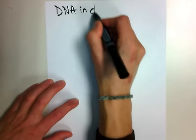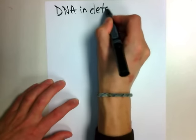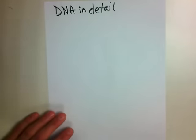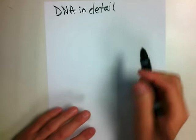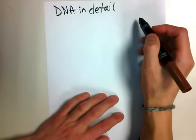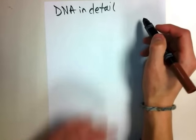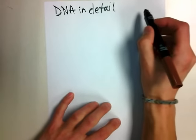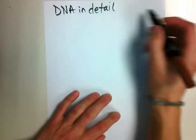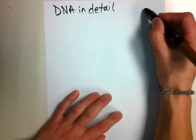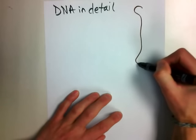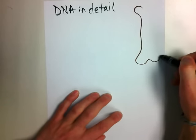DNA in detail. Last time we talked about DNA, we talked about it in broad senses. We talked about how DNA basically makes protein. So I'll bring it together and talk in more detail. Start with a bone and we're going to look inside of the bone marrow.